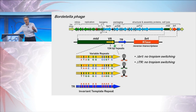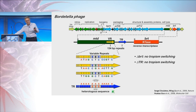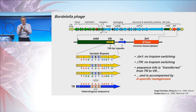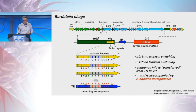We thought maybe what's happening is a transfer of information from an invariant template to a region of variability, and that information transfer is coupled to adenine-specific mutagenesis. An undergraduate in the lab by the name of Sergei Dulatov tested this very simply: he inserted a heterologous sequence into the template region, let the system do its thing, and sure enough, it appeared in the variable region with its adenines mutagenized.